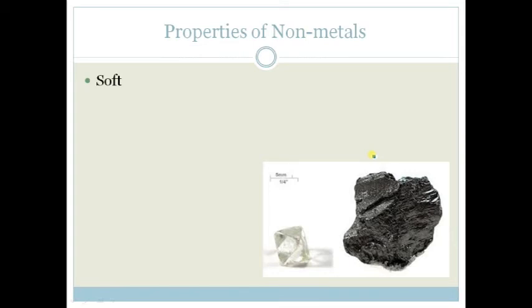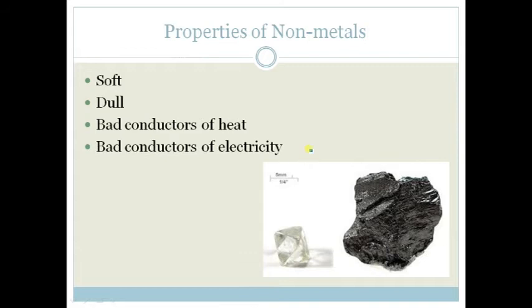Properties of non-metals: they are soft, much softer than metals. They are dull, not shiny at all. They are bad conductors of heat and electricity. However, carbon is a non-metal that is actually a very good conductor of electricity.